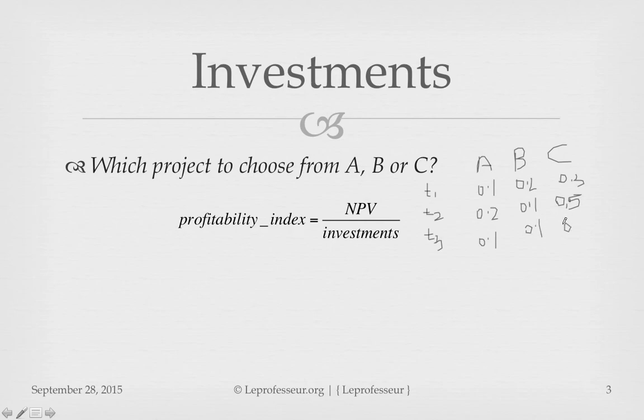In another period it might come to 0.1, 0.1, and 0.4 for projects A, B, and C. This is just a hypothetical example — which one would you choose?